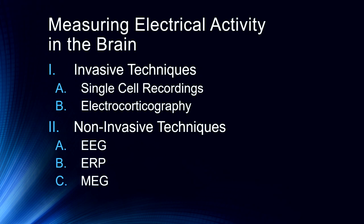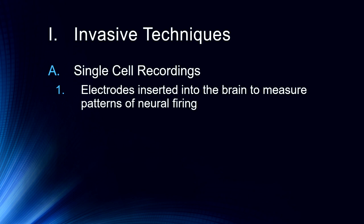We'll then talk about non-invasive techniques. These include two closely related techniques that use the same equipment: electroencephalography and event-related potentials, and then we'll finish up with a more advanced version called magnetoencephalography. The first thing we have to remember about all of this is that the brain functions via the firing of action potentials, which are electrical signals generated by neurons themselves.